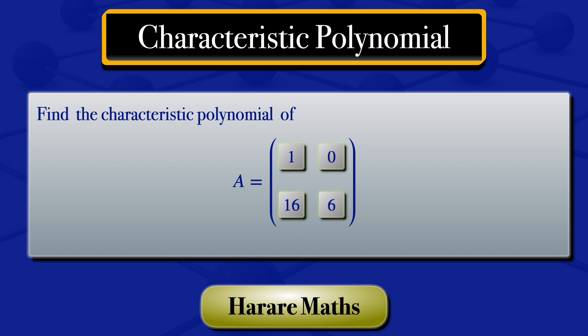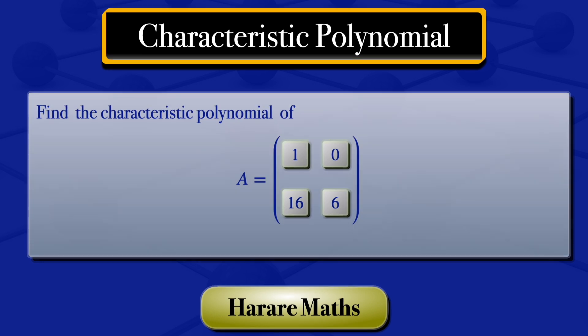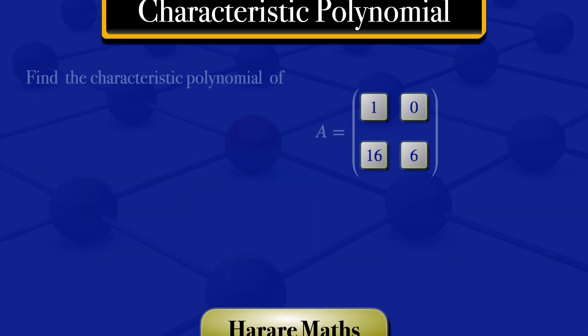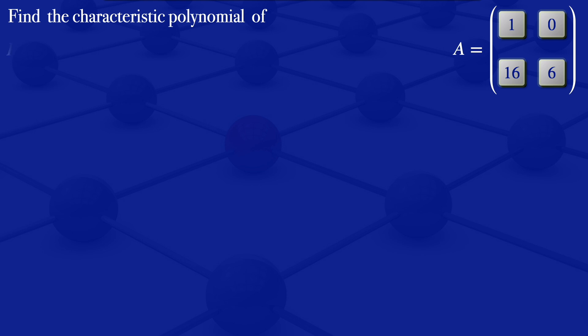In this video, I'm going to find the characteristic polynomial of the matrix A, which has elements 1, 0, 16, 6. By definition, the characteristic polynomial of a matrix A, which we denote by P_N of lambda, is the determinant of A minus lambda I_N.